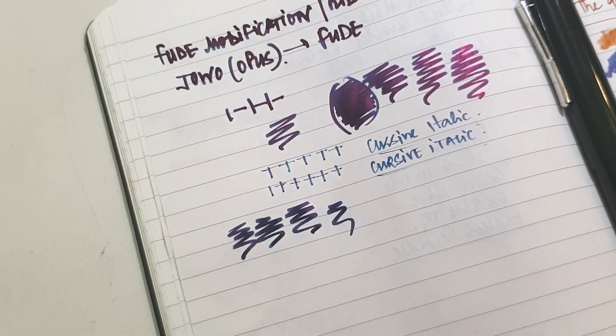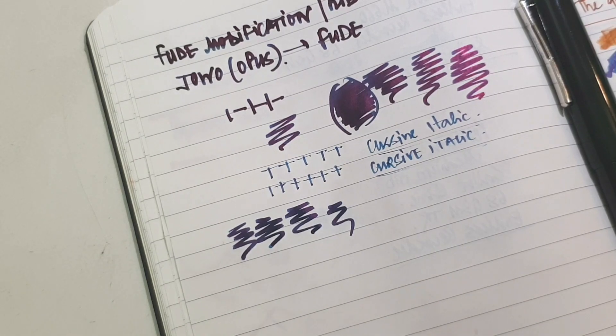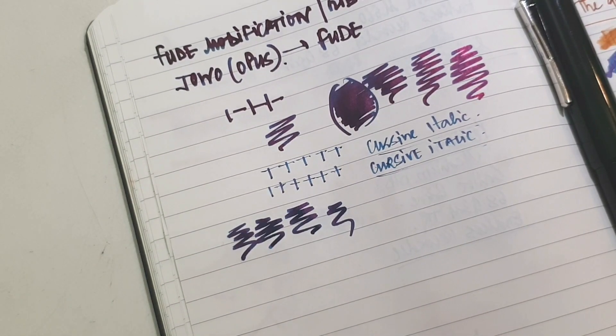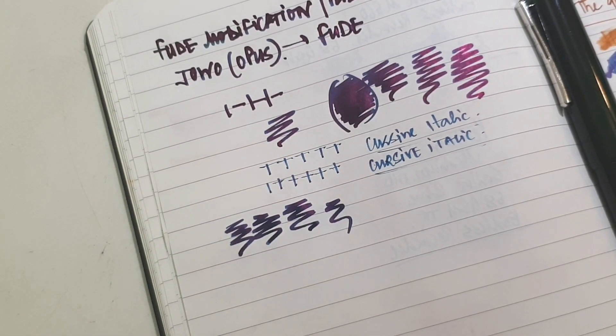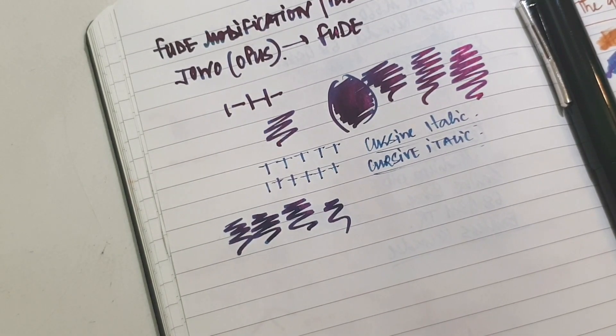Now, the giveaway would be for 2 nibs, I mentioned last time, it would be for a stub nib which would be done by Jaspreet. And then a second one which I had just shown, it is an oblique broad.